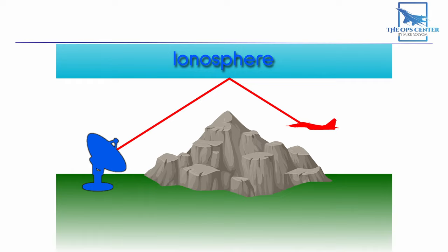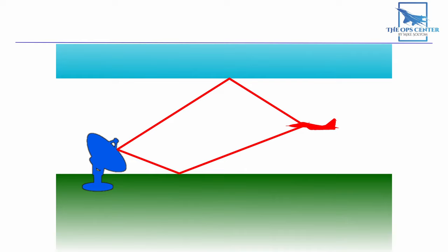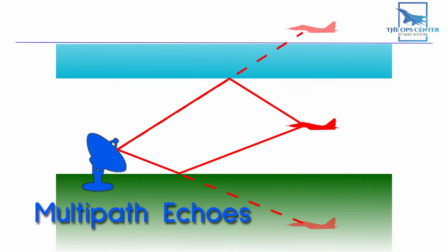They can also bounce up off the surface and may potentially interfere with return echoes. These extra returns are known as multi-path echoes, and they can cause ghosts to appear in a pattern like this. So it's something that builders and operators of radar systems need to account for.